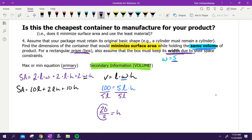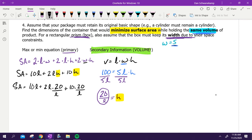Once I've done this, what am I going to do? Plug it in everywhere I have an H. I'm going to plug in 20 over L. So it's 10L + 2L times 20 over L + 10 times 20 over L. Now my equation's in terms of one variable. I'm going to simplify it.